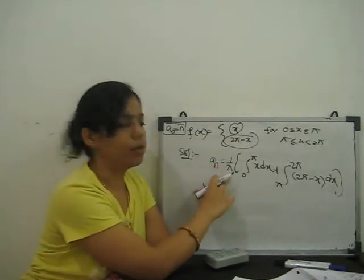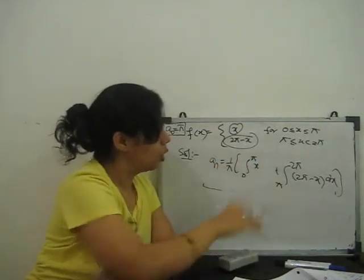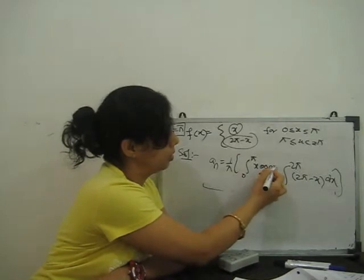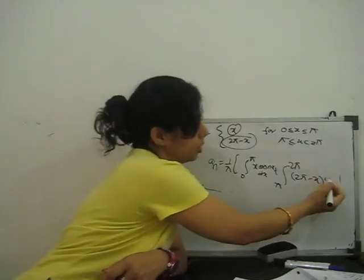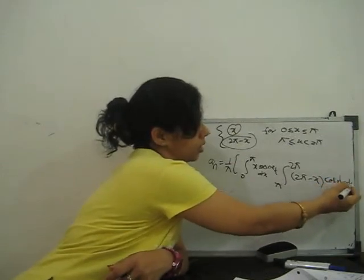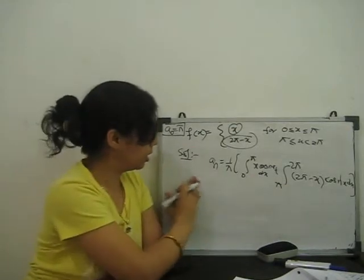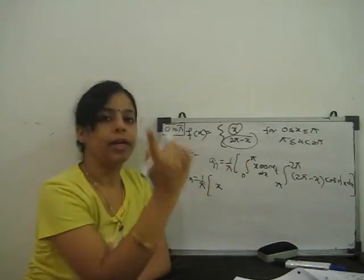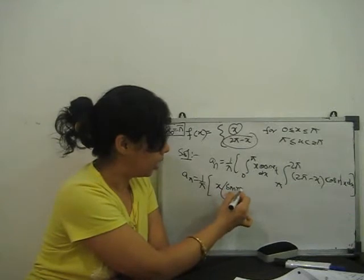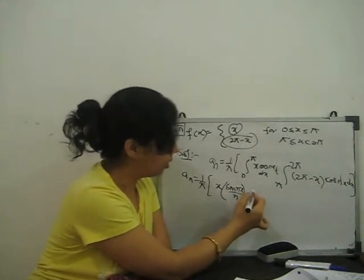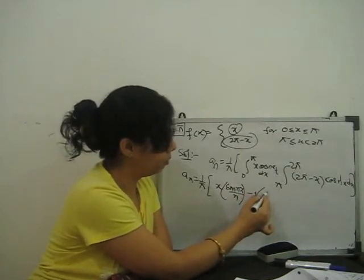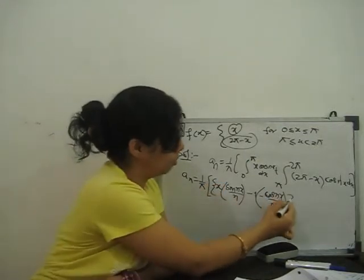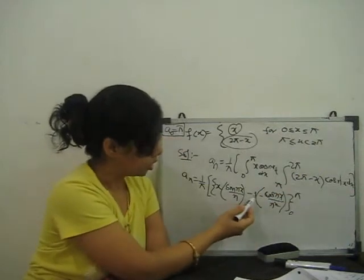an = (1/π)[integral 0 to π of x·cos(nx) dx + integral π to 2π of (2π − x)·cos(nx) dx]. We integrate by parts: for x·cos(nx), we get x·sin(nx)/n − (−cos(nx)/n²), with limits 0 to π. For the second term (2π − x)·cos(nx), similarly integrated by parts with limits π to 2π.